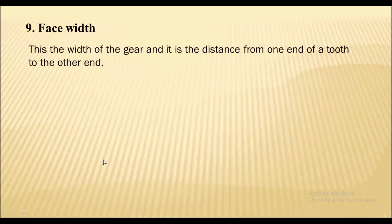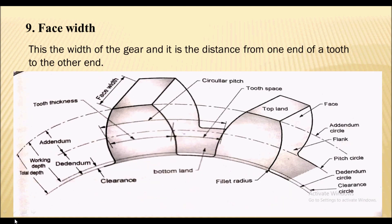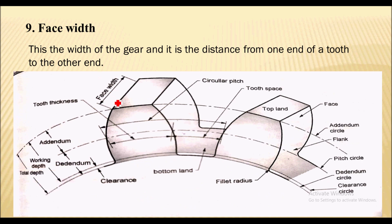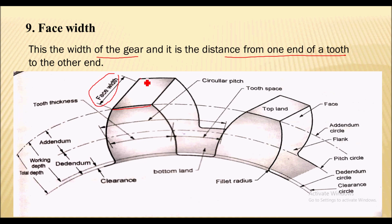Next is the face width. The face width is the width of the gear — it is the distance from one end of the tooth to the other end of the tooth.